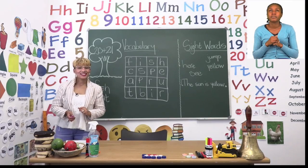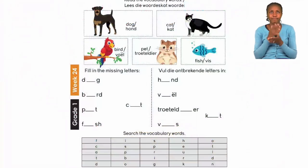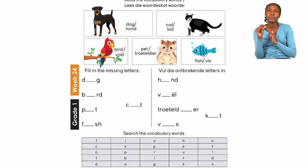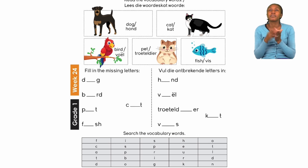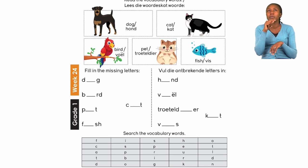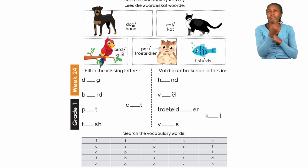For this part of our lesson we will start on page 20 and do some vocabulary. The instruction says you have to read the vocabulary words. For each vocabulary word you also have a picture. Let's quickly read the words: the first one is dog, then we have cat, bird, pet, and fish. Every vocabulary word has a picture to help you find or know these words.